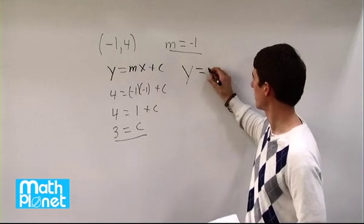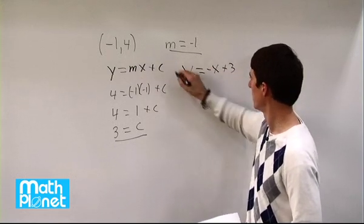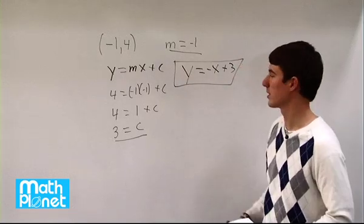y equals negative x plus 3. There's our equation in slope intercept form.